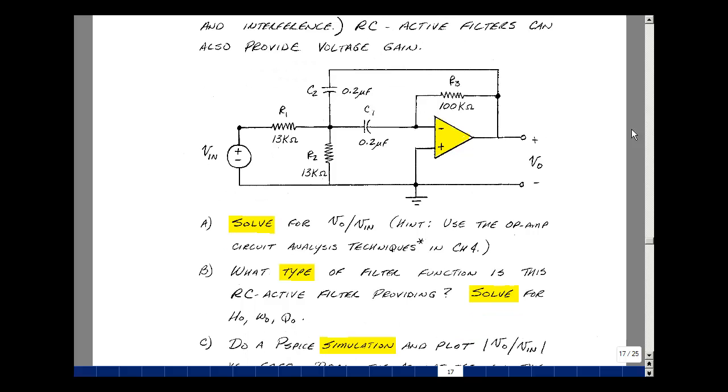Given this circuit, which has an op-amp, three resistors, and two capacitors, can you solve for Vout over Vin using the op-amp circuit analysis techniques that we looked at in Chapter 4 of ECE-201? Next, what type of filter function is this RC filter providing?